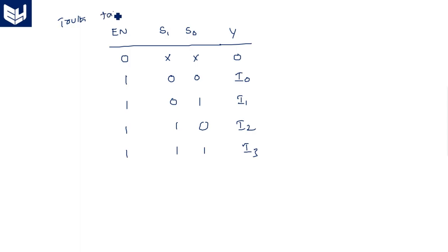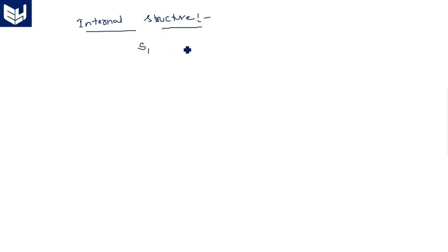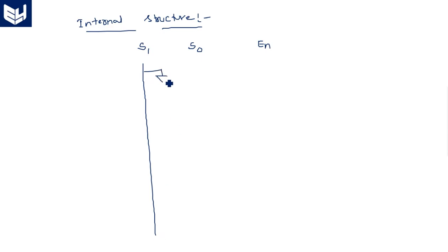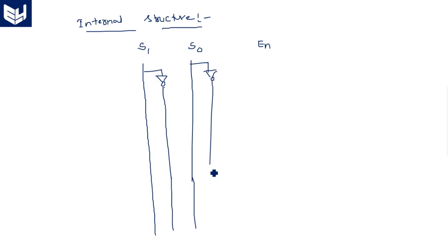Now let's see the internal architecture using basic AND, OR, and inverter gates derived from the truth table. The internal structure uses S1, S0, and the enable pin. We generate the complemented forms S1 bar and S0 bar. When the enable pin is high, the circuit is active.